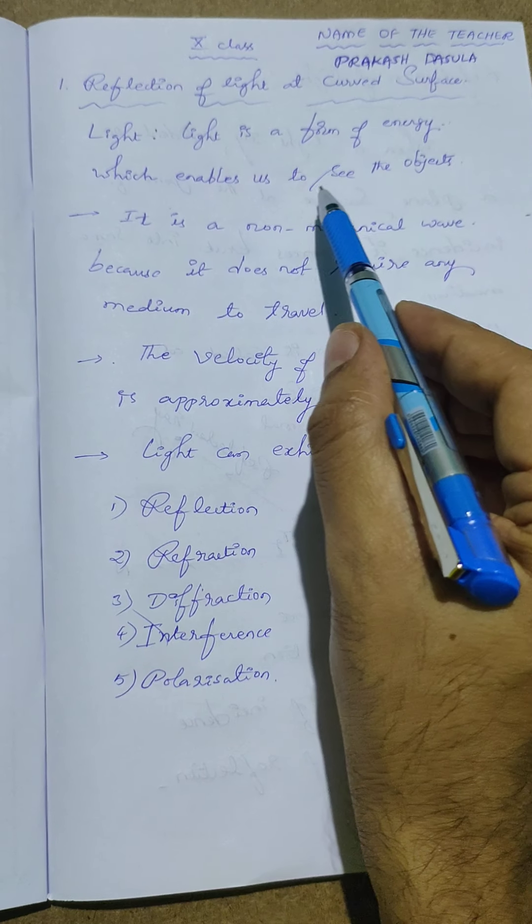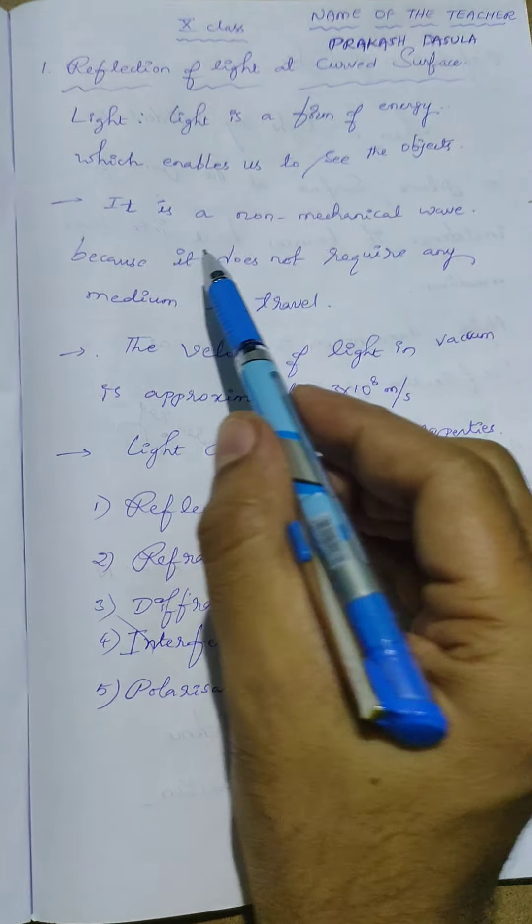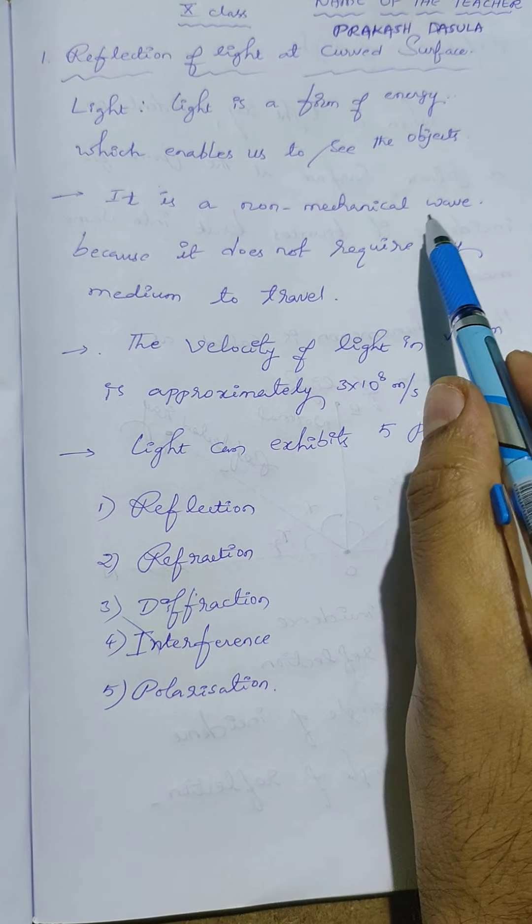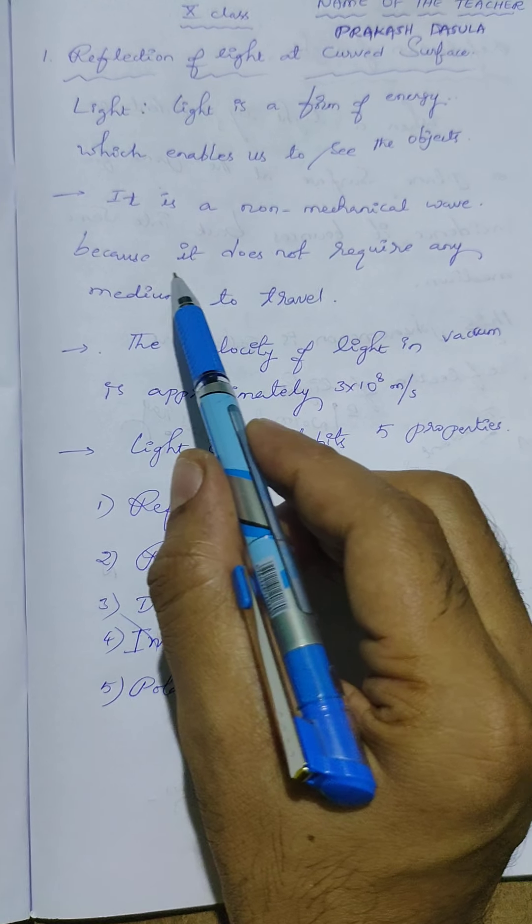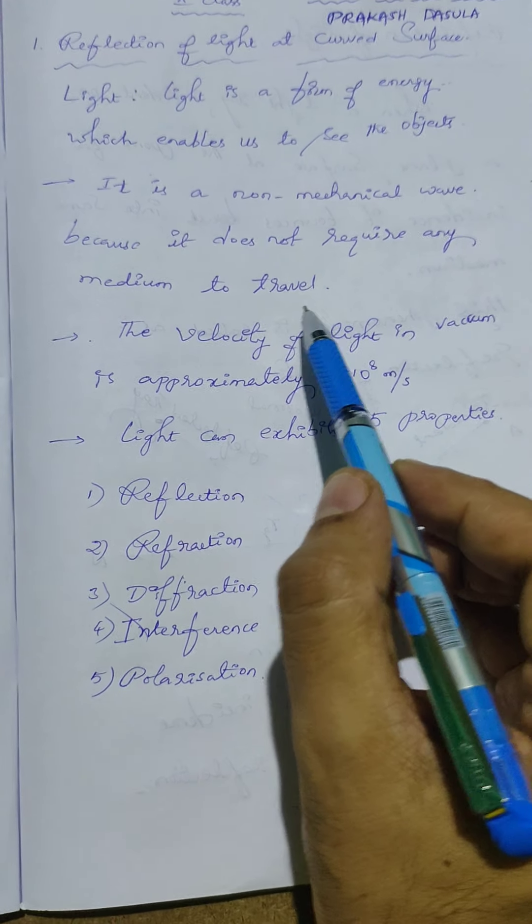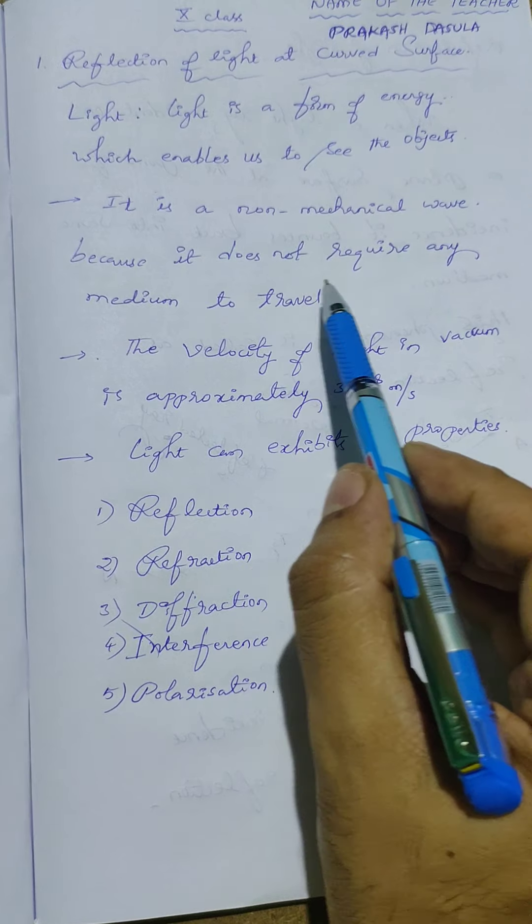So this light enables us to see the objects and this colorful world. And one more important point students: it is a non-mechanical wave. Non-mechanical wave means it does not require any medium to travel. So light does not require any medium to travel.